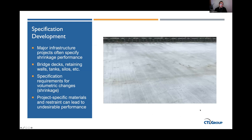In North America, major infrastructure projects often specify shrinkage performance because controlling cracks in bridge decks, tunnels, retaining walls, and similar structures is critical—not only for serviceability or aesthetic considerations, but also for preventing moisture, chlorides, and other agents from penetrating the concrete and reducing the durability of those structures.